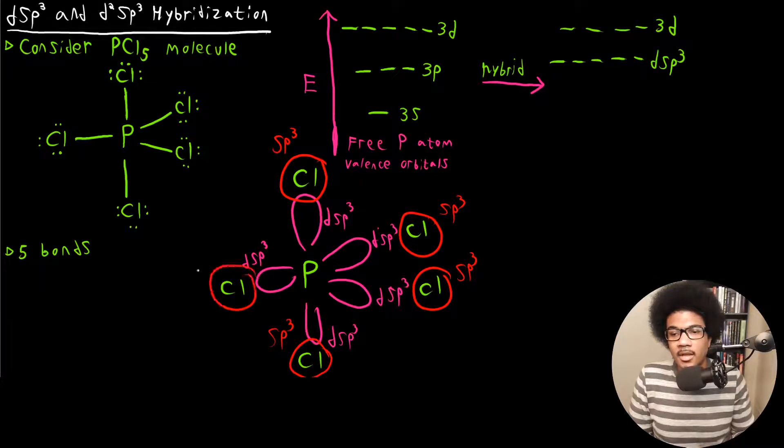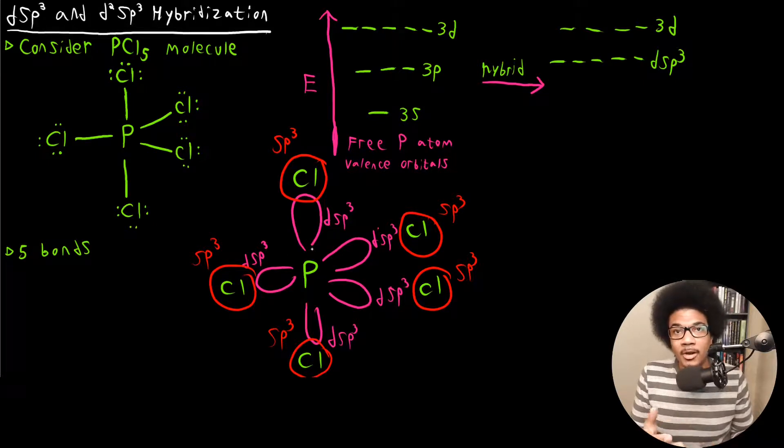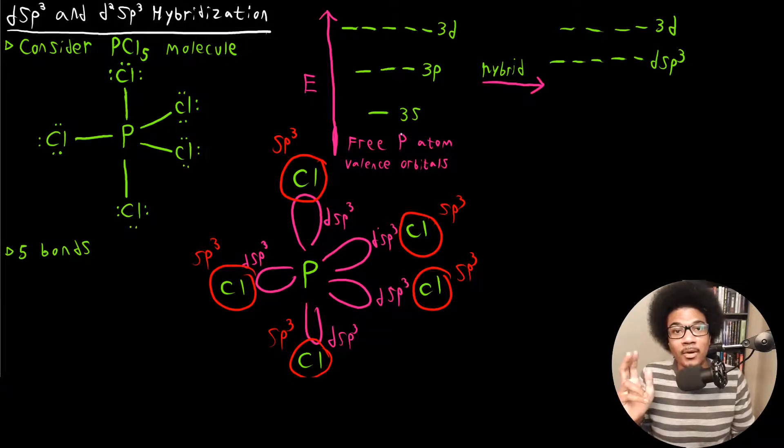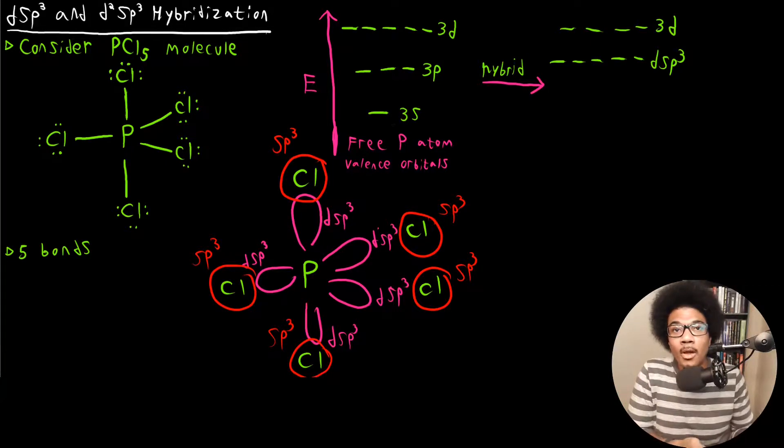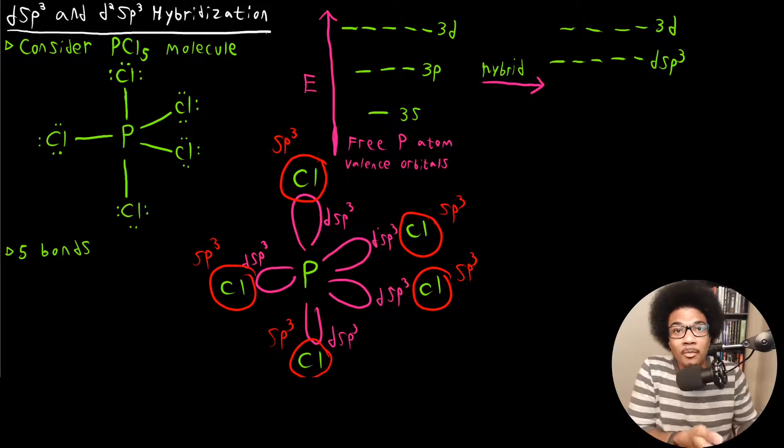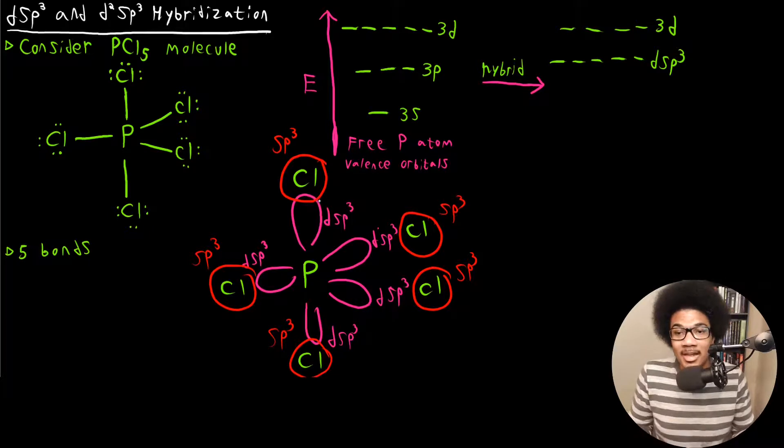SP3 and SP3 here. So all of these phosphorus chlorine bonds are going to be sigma bonds that are formed between overlap of a DSP3 hybrid orbital on phosphorus and a chlorine SP3 orbital. So when I said that these atoms are exceptions to the octet rule because the D orbitals get involved, what I mean by that is that they get involved with the hybridization. They form hybrid orbitals necessary to accommodate these extra bonds from more atoms.